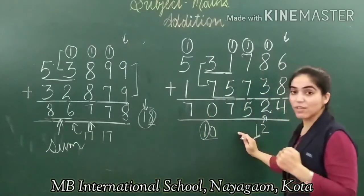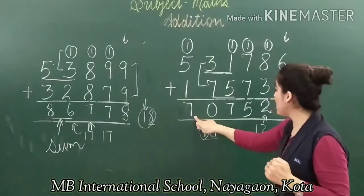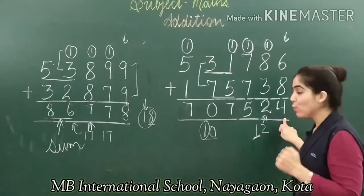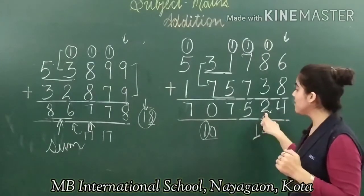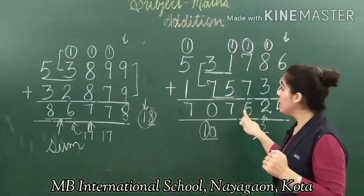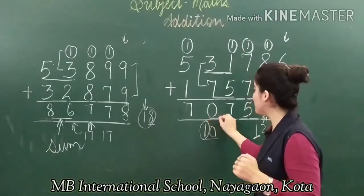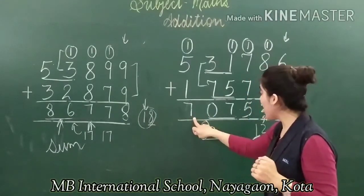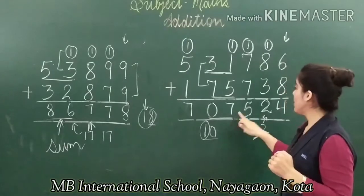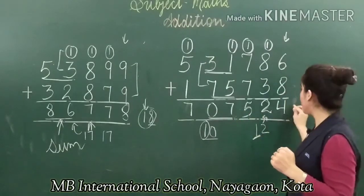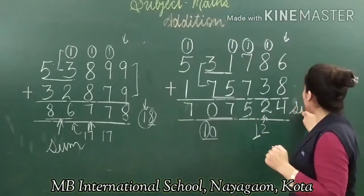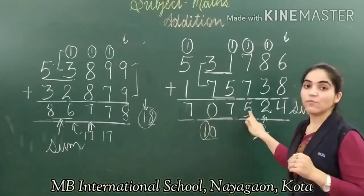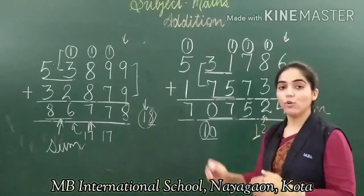Now we have the sum. Reading the place values — ones, tens, hundreds, thousands, ten thousands, lakh — reading together: seven lakh, seven thousand, five hundred, twenty-four. The sum is seven lakh, seven thousand, five hundred, twenty-four.